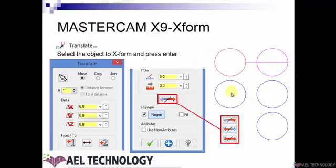We will start with XForm Translate. When you click on XForm Translate, you need to select the object and then press Enter. You will get a dialog box where you have to decide first whether you need to move, copy, or join the part. Based on your requirement, you can opt for any of these, and if you want to move in X, Y, or Z direction, you just enter those values.